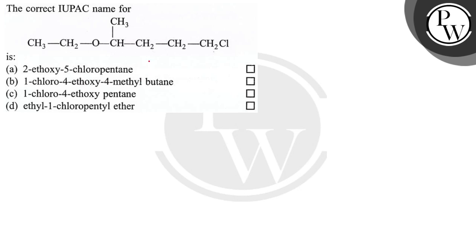Hello, let's read the question. The question says the correct IUPAC name of the compound is 2-ethoxy-5-chloropentane, 1-chloro-4-ethoxy-4-methylbutane, 1-chloro-4-ethoxy-pentane, or ethyl-1-chloropenthyl ether.